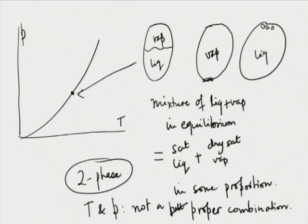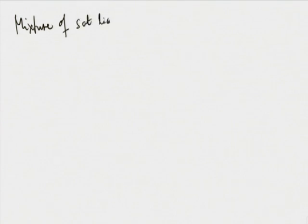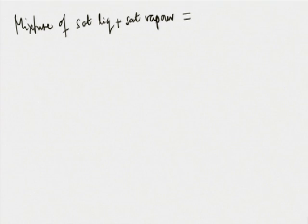If you say 1 atmosphere, 100 degrees C, we do not know what it is — it could be any ratio between liquid and vapour. So we define for a mixture of saturated liquid plus dry saturated vapour the technical name 'wet vapour.' The question of why not 'dry liquid' — that is just tradition.